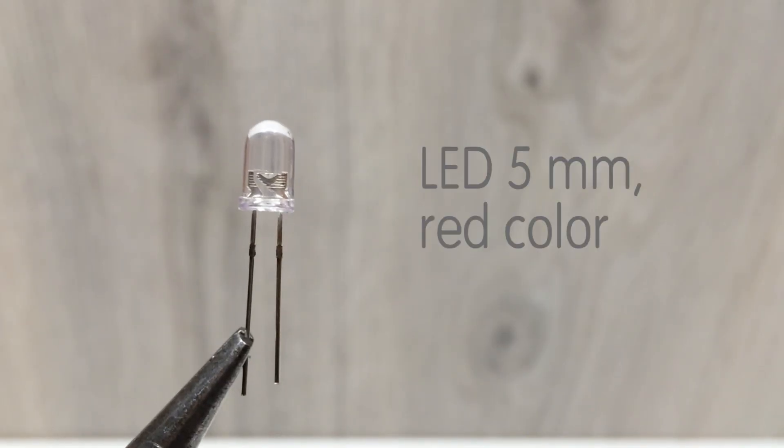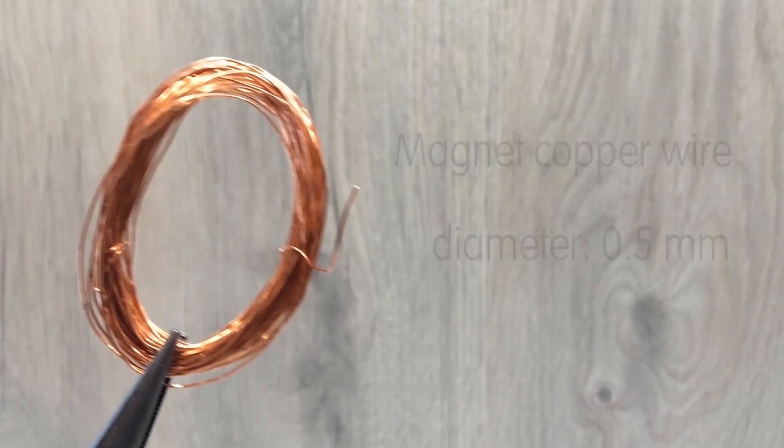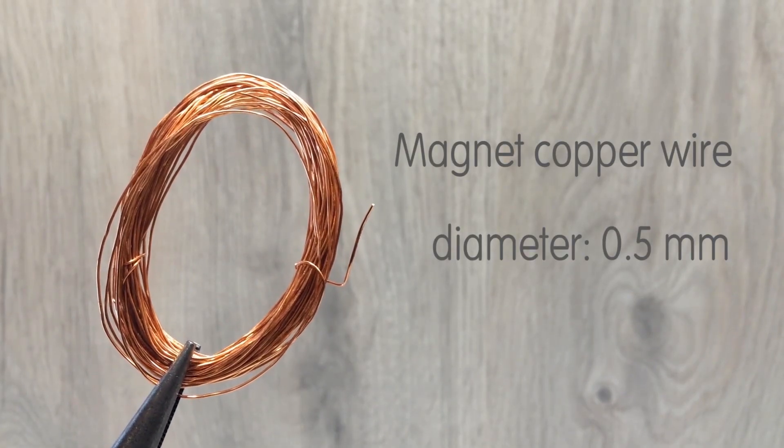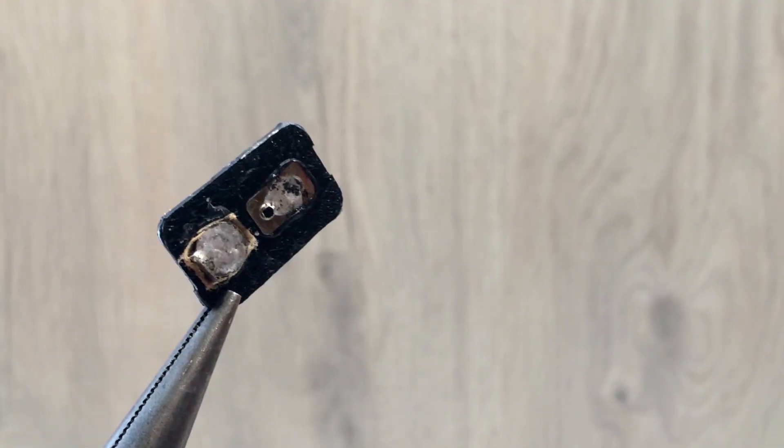A LED, this will be our indicator, a 1kΩ resistor, some thin insulated copper wire for the antenna, and a standard clip connector for a 9V battery.